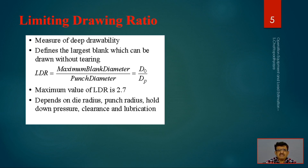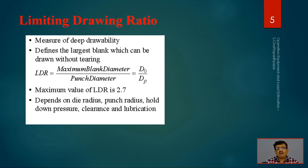The LDR (Limiting Drawing Ratio) represents the largest blank-to-diameter ratio, and its maximum value is defined by standards as 2.7. Under no circumstances can the ratio of maximum blank diameter to punch diameter exceed 2.7. This depends on variables such as die radius, punch radius, hold-down pressure, clearance, and lubrication — all of which have a role to play.